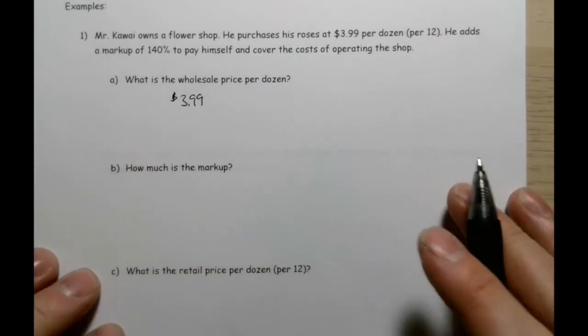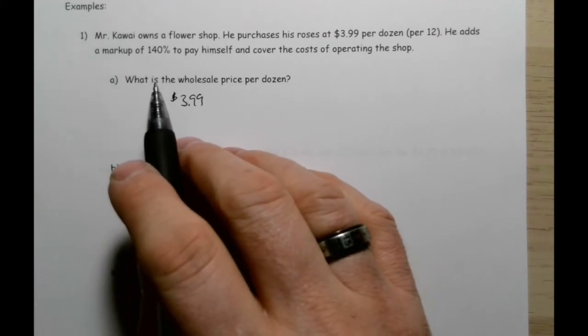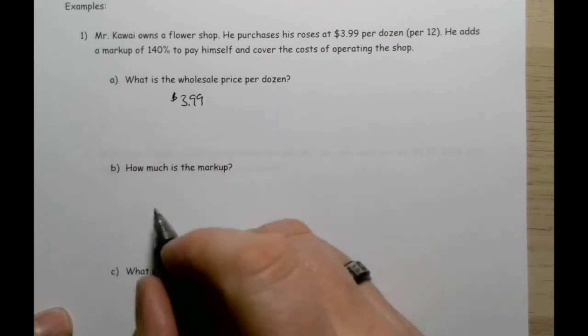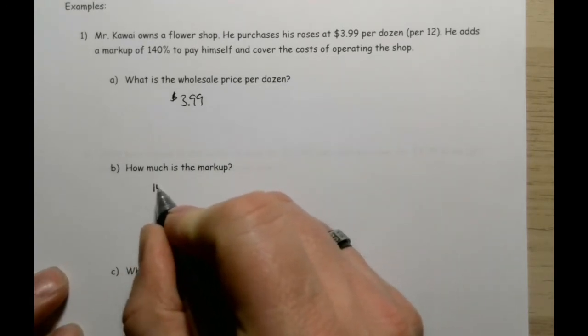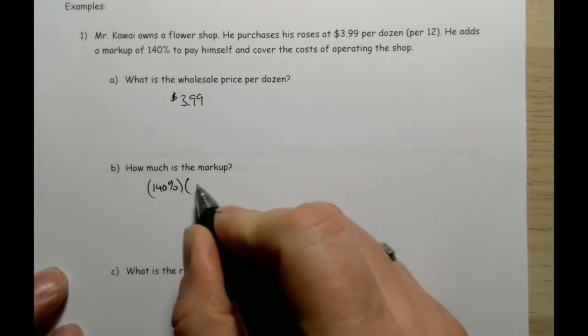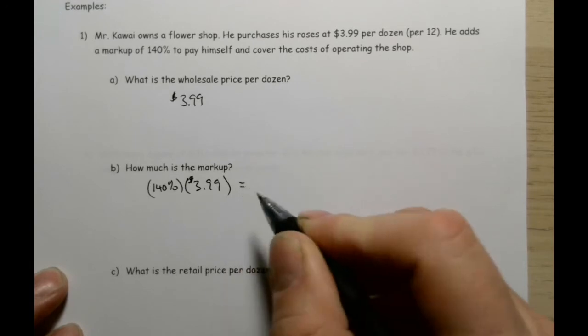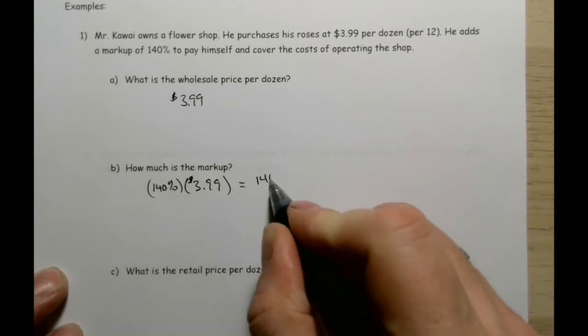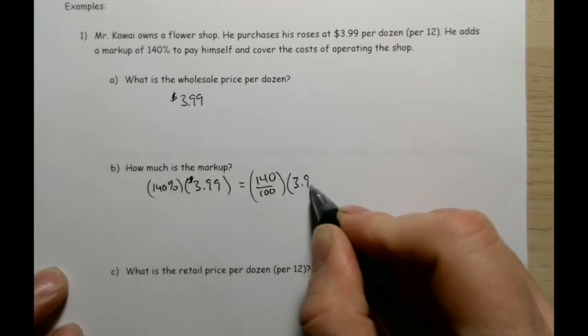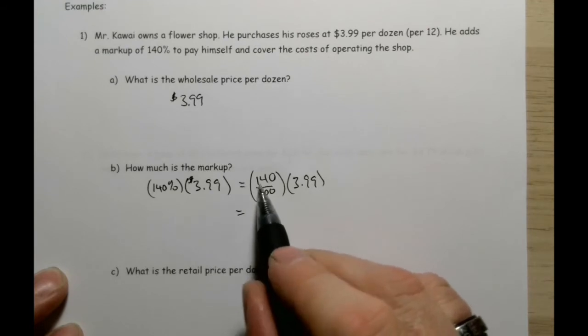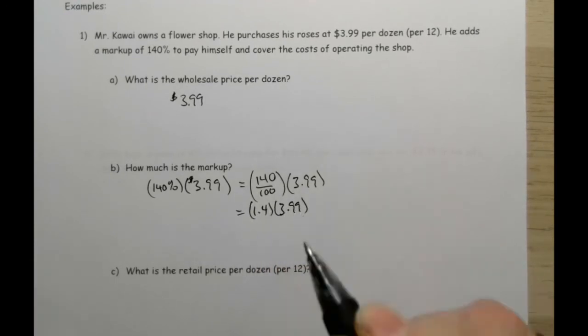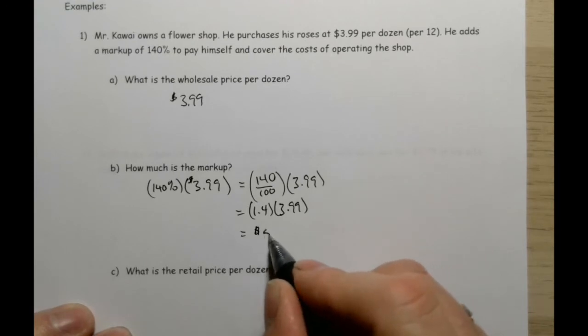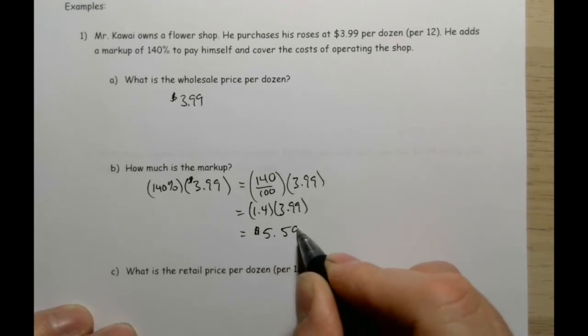Now, how much is the markup? Well, he is going to mark it up 140% of that price. So we got to figure out what is 140% of $3.99. Remember how that works: 140%, and when we do 'of', we mean multiplication here. So 140% of $3.99. That's 140 over 100, multiplied by $3.99. 140, remember, we're going to move the decimal two places over, so it's going to be 1.4 times $3.99. Now I go to my calculator, 1.4 times 3.99, and he is going to mark that up $5.59.